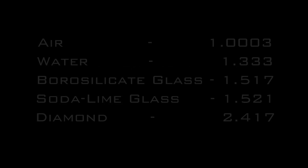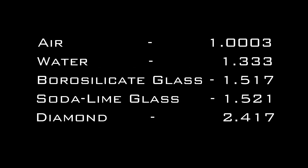This index is expressed as a ratio to the speed of light in a vacuum. Denser materials have a higher index of refraction. Air, water, and glass all transmit light but slow it down differently, so they all have different refraction indexes.